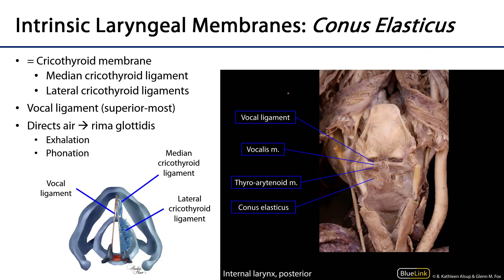We can contrast the quadrangular membranes with the conus elasticus, which is a single membrane with several constituent parts. It's oftentimes referred to as the cricothyroid membrane, but it is so much more than that.